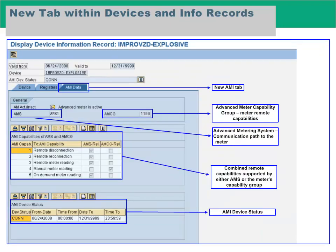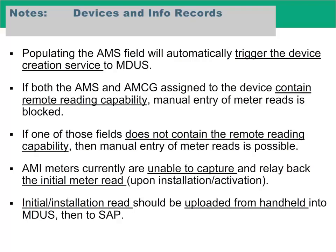This screenshot shows new functionalities introduced as part of SAP AMI activation. Populating the AMS field will automatically trigger the device creation service to MDUS. If both the AMS and AMCG assigned to the device contain remote reading capability, manual entry of meter reads is blocked. If one of those fields does not contain the remote reading capability, then manual entry of meter reads is possible. AMI meters currently are unable to capture and relay back the initial meter read upon installation or activation. The initial installation read should be uploaded from a handheld into MDUS, then to SAP.